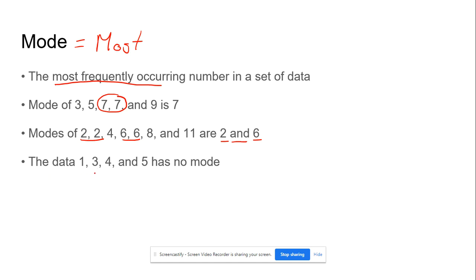The data 1, 3, 4, 5. There is no mode in this because they all show up the same amount of time. They all show up one time, meaning there is no mode.